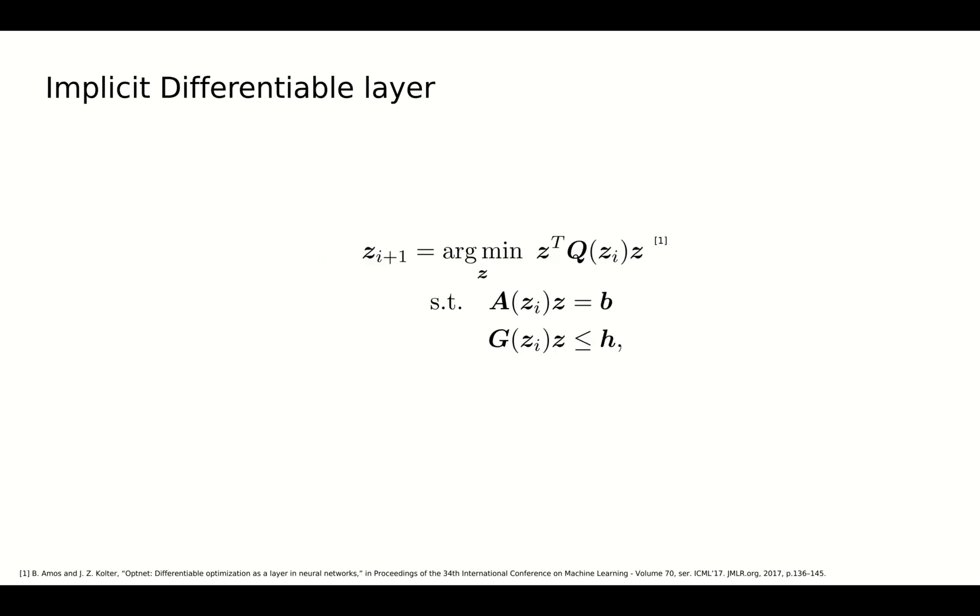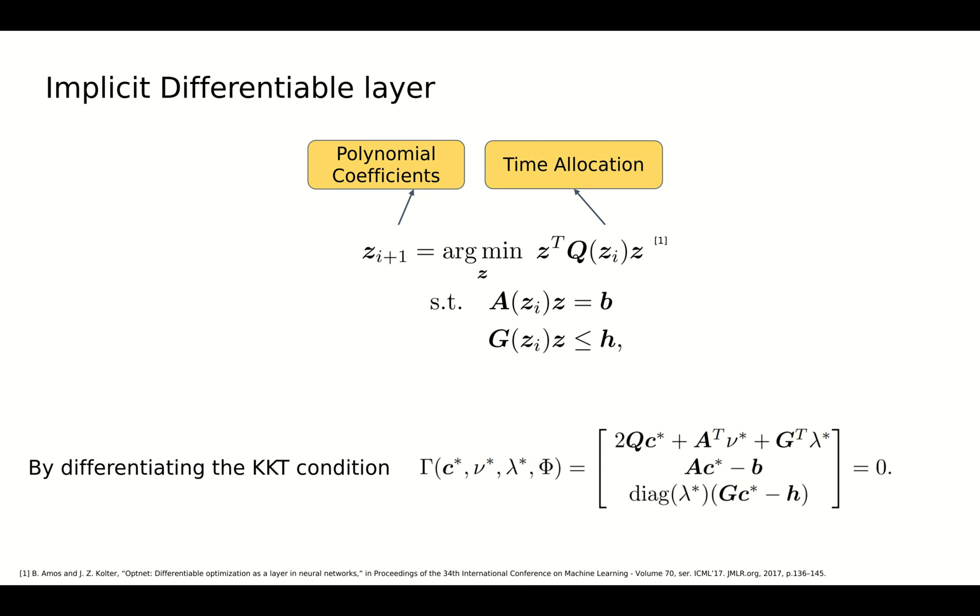For a feasible time allocation, we use implicit layers to formulate a quadratic program and solve it directly. Then we can back-propagate its gradients to time allocations.